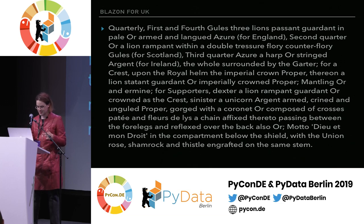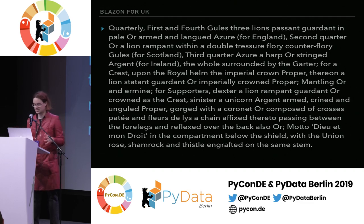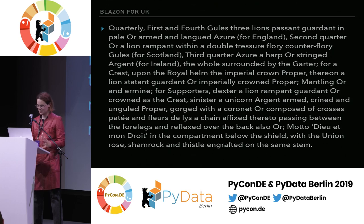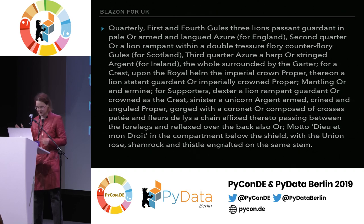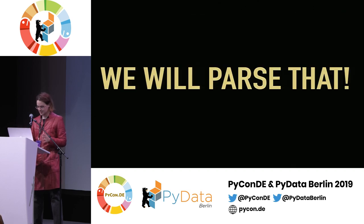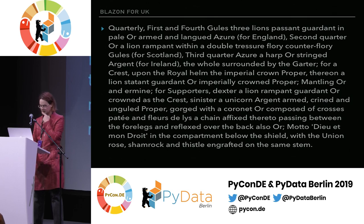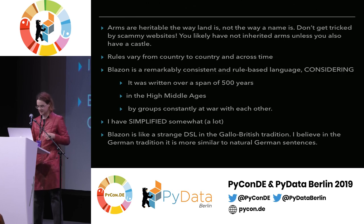Here's an example of a Blazon. This is the Blazon that describes, in a linguistic way, the coat of arms we just saw. And if you read it, you notice that it is total gibberish. It doesn't have sentences or any way you can understand it. It's kind of written in English, but also there's all these other words in there that seem French. So we're going to parse that. It's a DSL, as I said.